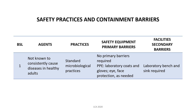For safety equipment or primary barriers in BSL 1, there are actually no primary barriers required. Personnel only need to wear complete PPE — laboratory coats, gloves, and eye and face protection — when processing specimens containing the agent. For secondary barriers, a laboratory bench and sink are required. You can simply perform research on the benches without any special containment equipment.